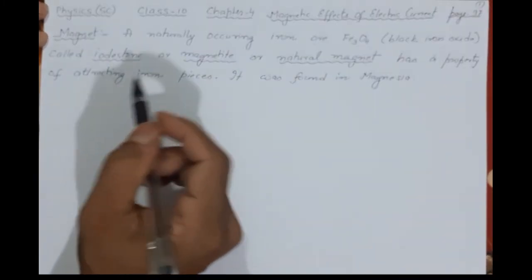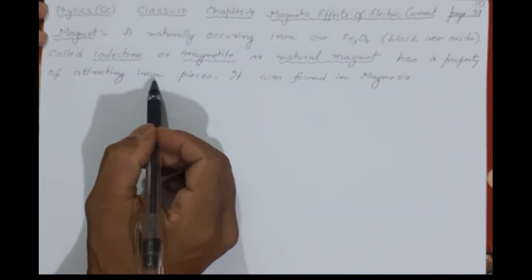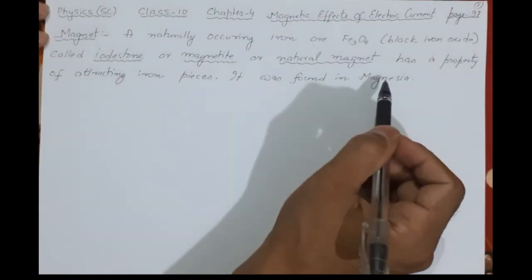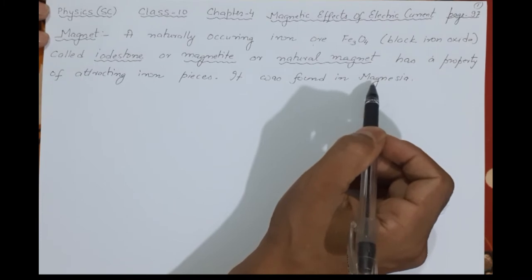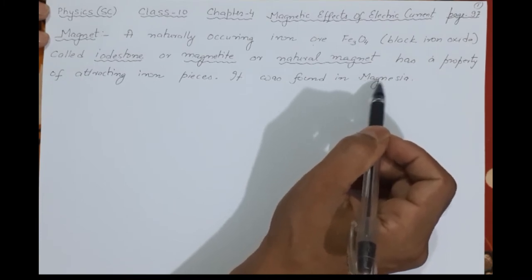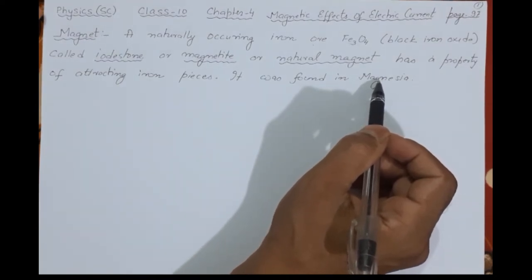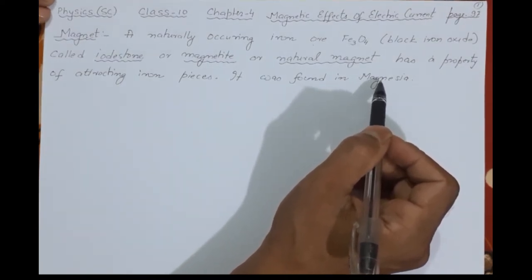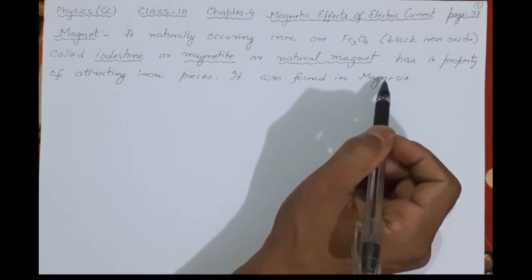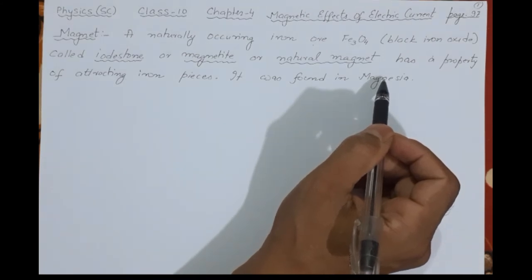The magnet has the property of attracting iron pieces. It was found in Magnesia, a place near a Greek city. It is believed that the Greeks were the first to discover that there is something which attracts things. In that name — Magnesia — the object itself came to be called a magnet.